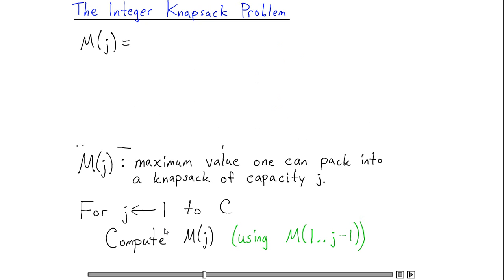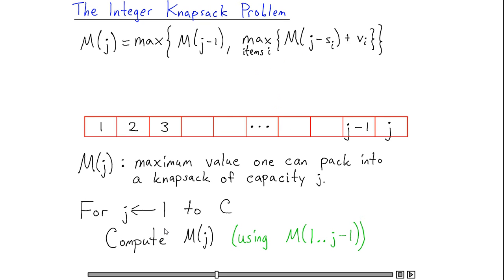In order to do this computation, we need to be able to write a formula which expresses the value of M(j) in terms of optimal solutions to smaller subproblems, that is, M of values smaller than j. In this case, we get the following formula. We can explain this formula in terms of the picture I've just drawn as follows.